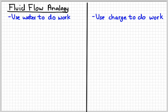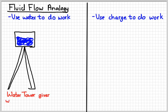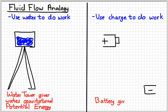So an example of how you can use water to do work, you take something like a water tower. Water towers are there so that water can have gravitational potential energy. That would be kind of like a battery. Battery gives charges electric potential energy.